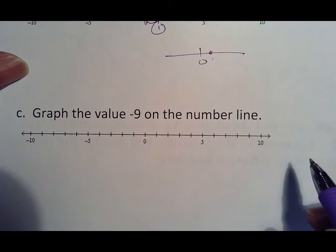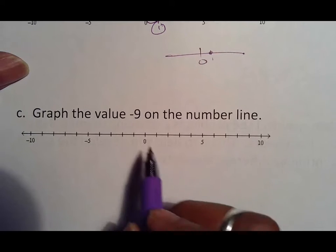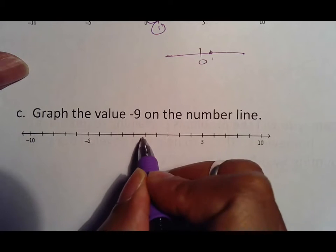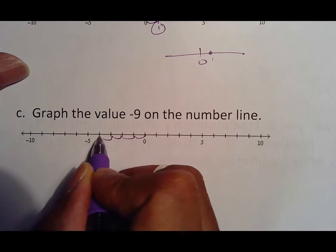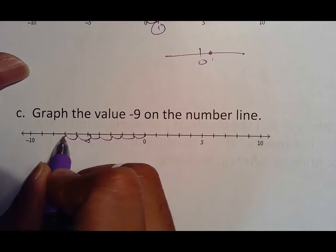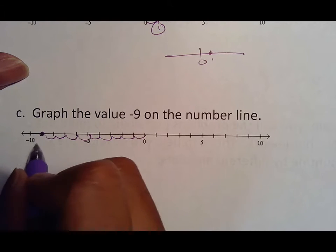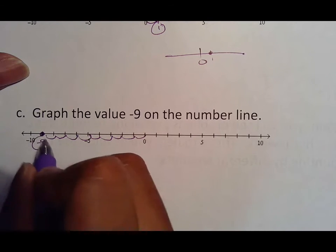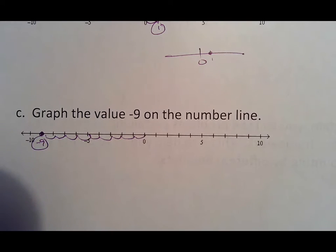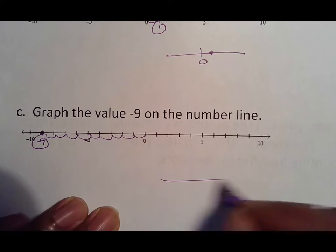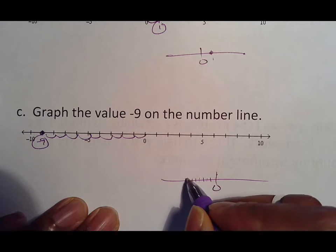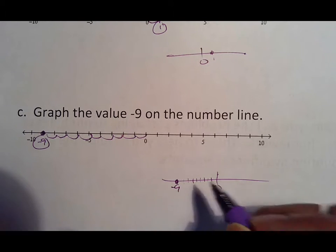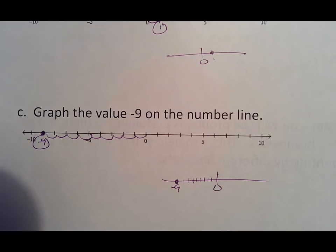If you were to put negative nine on a number line, again start at zero: one, two, three, four, five, six, seven, eight, nine. It makes sense that negative nine will be right next to negative ten. On your own paper, make sure you show me a zero, then one, two, three, four, five, six, seven, eight, nine — put your dot and label it as negative nine.